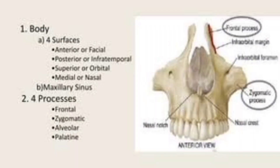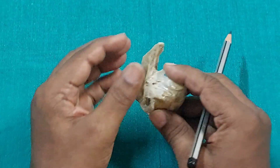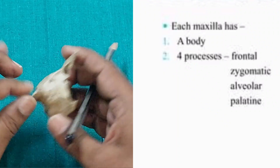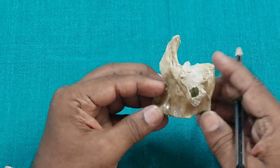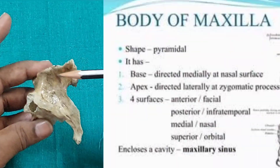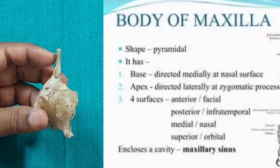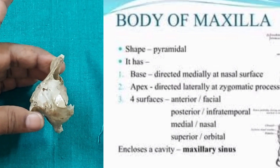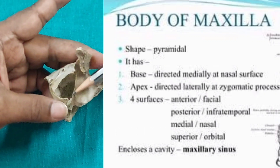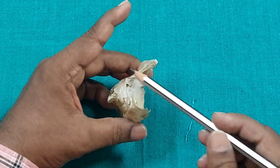The main parts of the maxilla include the body, which is pyramidal in shape, and four processes: frontal, zygomatic, alveolar, and palatine. The body has four surfaces: the anterior surface, the posterior surface (also called the infratemporal surface), the superior surface (or orbital surface, because it forms the floor of the orbit), and the medial surface (or nasal surface, because it forms the lateral wall of the nasal cavity).